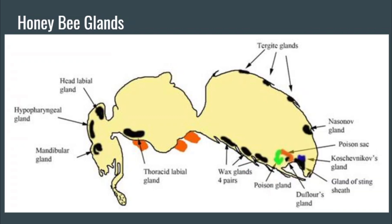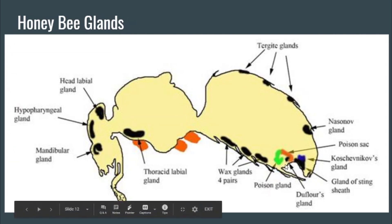Here we have a slide showing the various glands that produce these pheromones: the hypopharyngeal gland, the mandibular gland which produces the queen mandibular pheromone and in workers produces an alarm pheromone, the wax glands on their underside — if you've seen bees produce wax, they push out perfectly white wax plates from the underside of their abdomen — and the Nasonov gland at the base of their abdomen, along with the sting and poison gland.